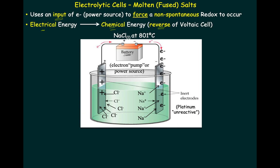On every battery, as we know, there's a negative terminal and a positive terminal. We're going to hook the negative terminal to one piece of metal and the positive to the other piece of metal. For this particular application, we're going to use platinum electrodes — pieces of metal made of platinum. We want them to be made of a metal that's not going to react. Platinum is an unreactive element. These are just pieces of metal that are inert — inert means unreactive.